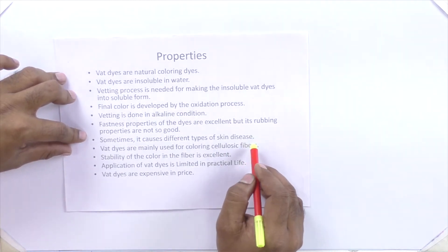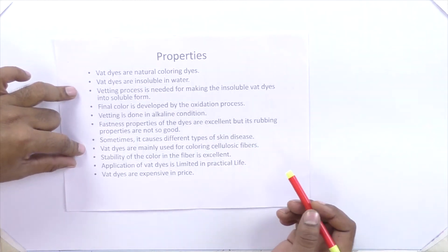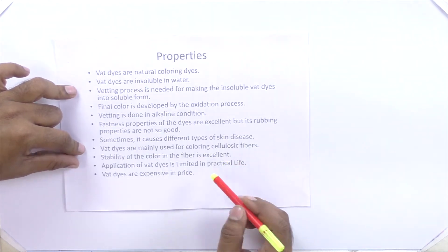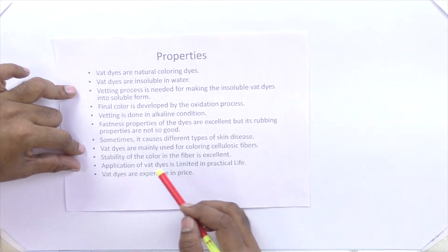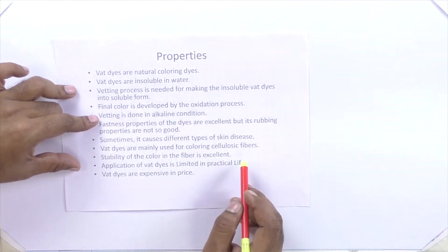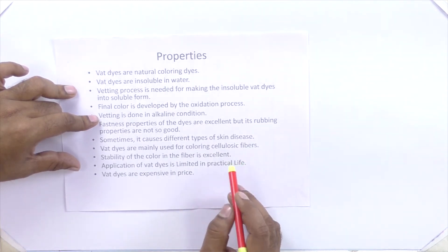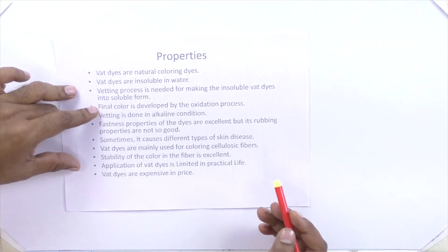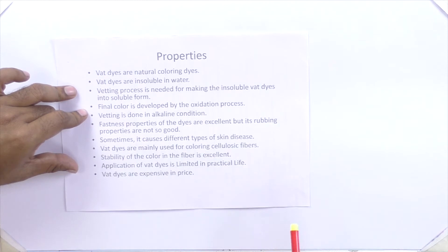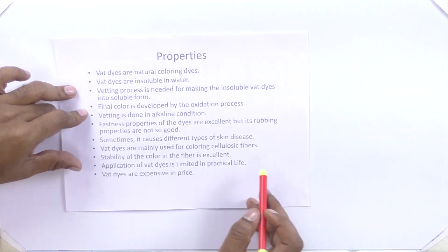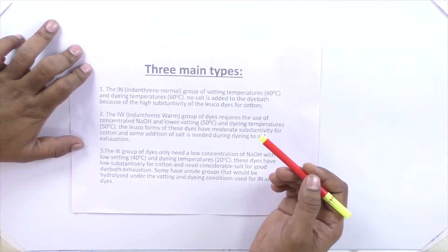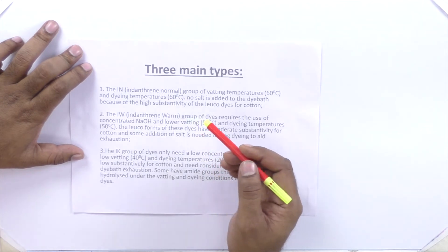Sometimes VAT dyes can cause skin disease, so they are not preferred for children's wear. They are mainly used for cellulosic fibers, and the color stability in the fiber is excellent. The application of VAT dyes is limited in practice because of cost — VAT dyes are very expensive, around 2000 to 3000 rupees per kg, compared to reactive dyes which are around 200 to 500 rupees per kg.